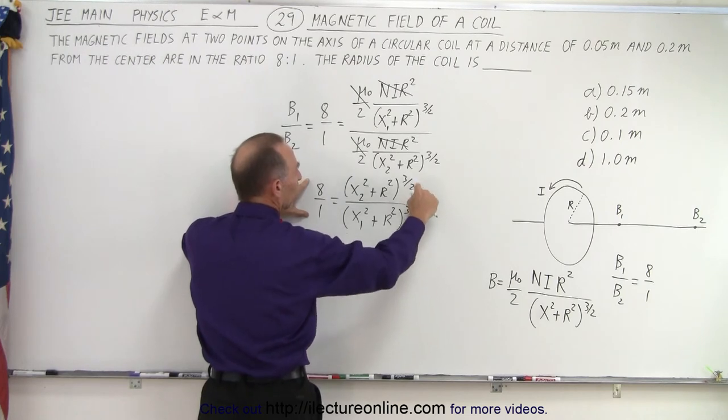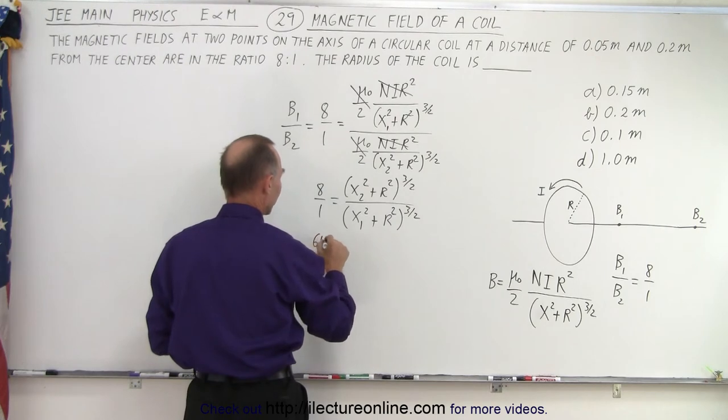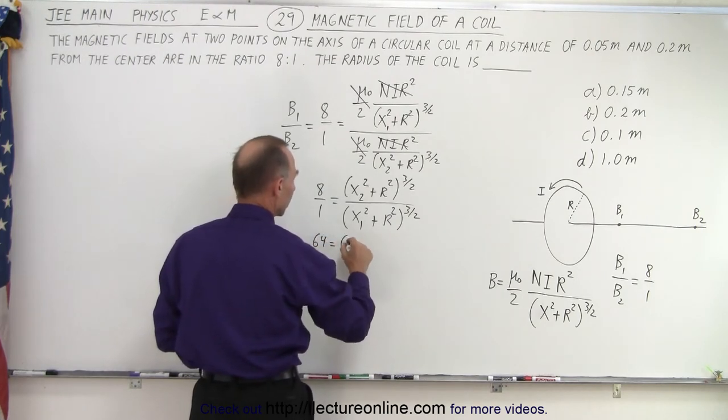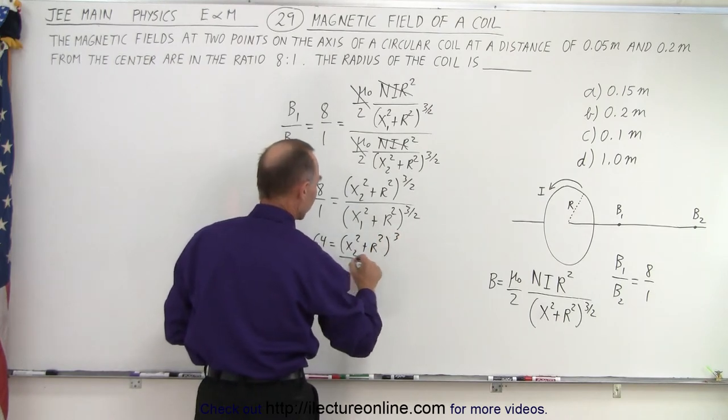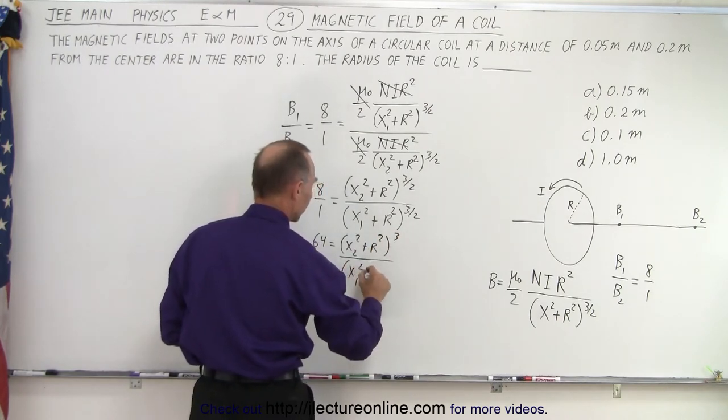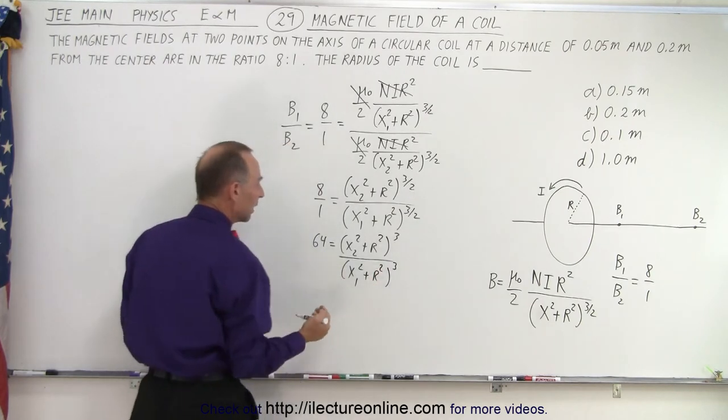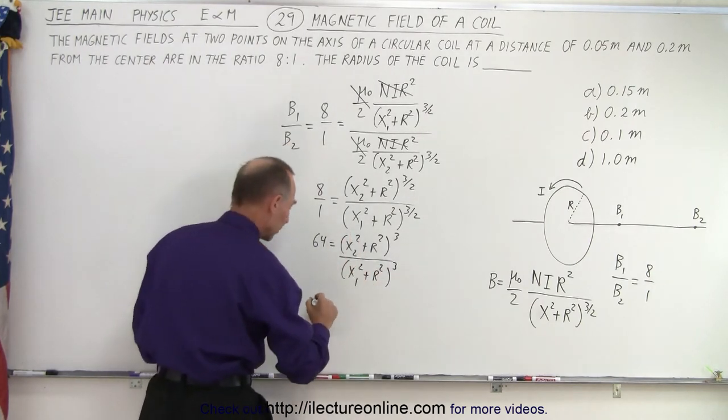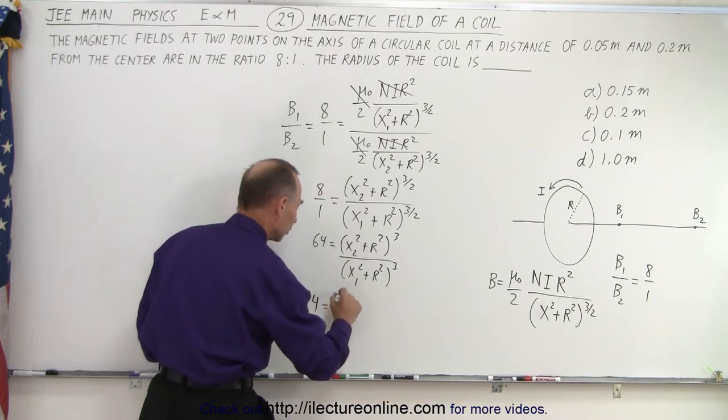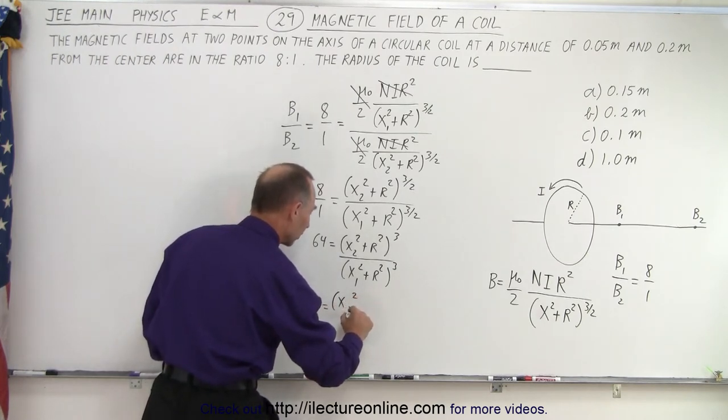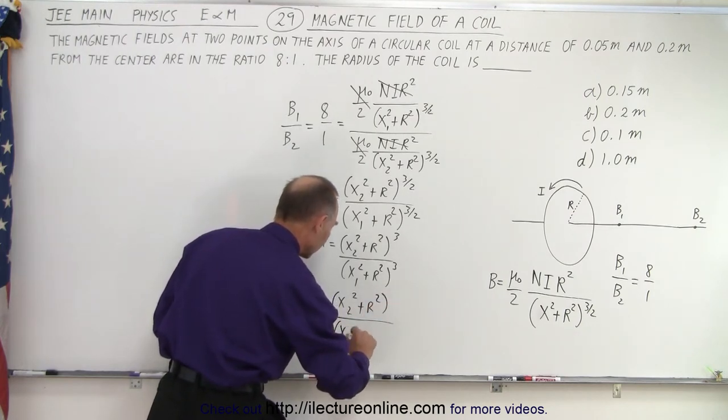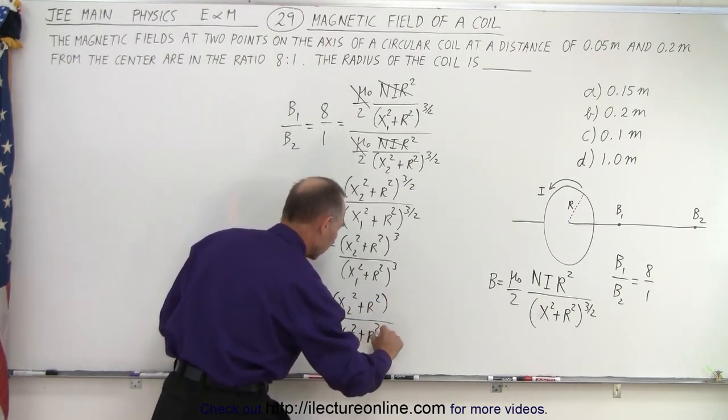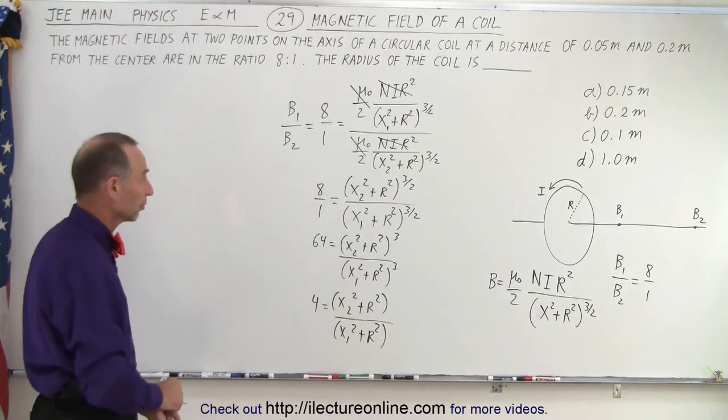And now we take the cube root of both sides so we end up with 4 is equal to x sub 2 squared plus r squared divided by x sub 1 squared plus r squared to the first power, just to get rid of the exponents.